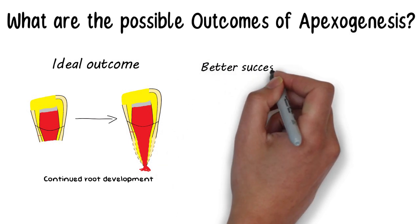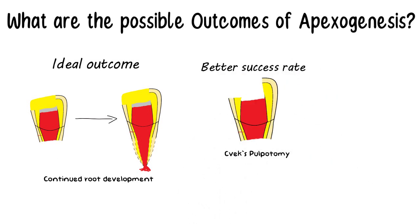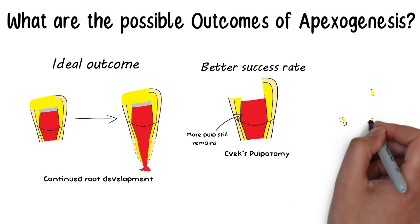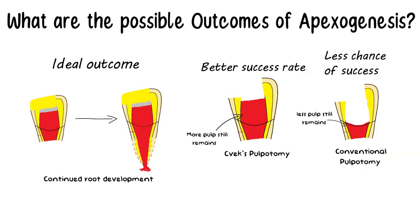Apexogenesis also has a good success rate with partial pulpotomy or CIVAX pulpotomy since more of the healthy pulp is still left in the tooth. After a conventional pulpotomy in which almost entire coronal pulp is removed, the success rate of Apexogenesis is low and calcific metamorphosis is a common occurrence.